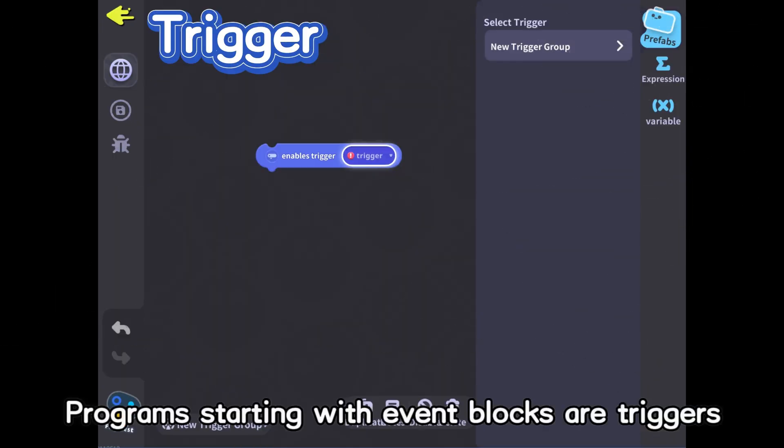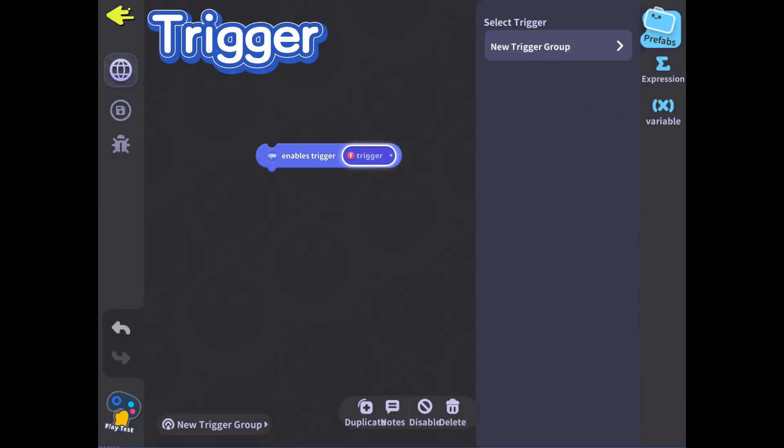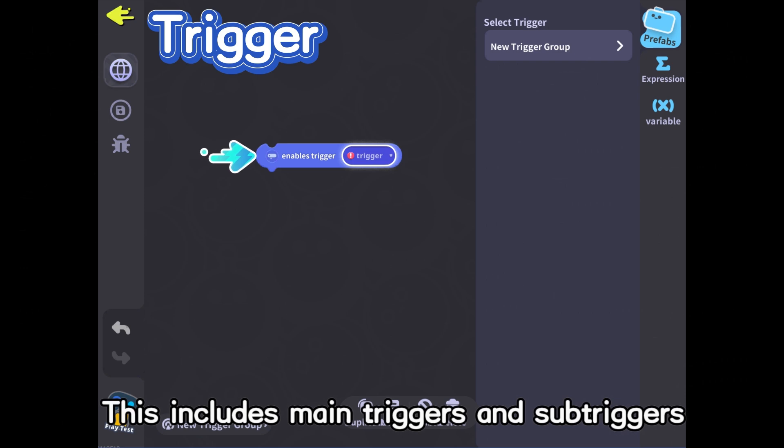Trigger: Programs starting with event blocks are triggers. This includes main triggers and sub-triggers.